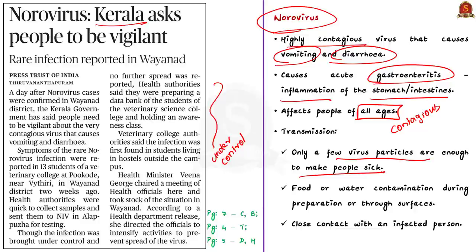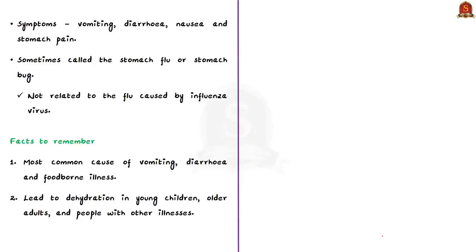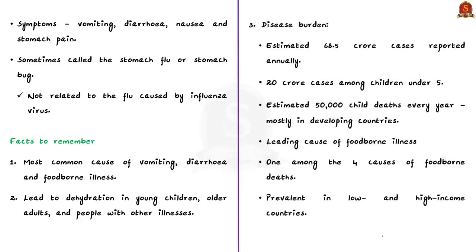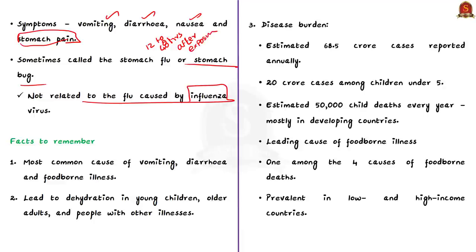How does this virus spread? This virus commonly spreads through food or water that is contaminated during preparation or through contaminated surfaces. It also spreads due to close contact with an infected person. The symptoms of norovirus include vomiting, diarrhea, nausea and stomach pain. A person usually develops symptoms 12 to 48 hours after being exposed to norovirus. Because of these symptoms, norovirus is sometimes called the stomach flu or stomach bug. But remember, norovirus is not related to flu, which is caused by influenza virus.